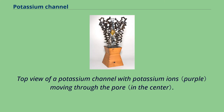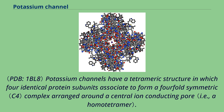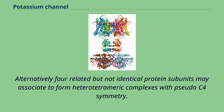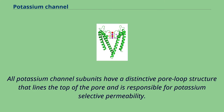Top view of a potassium channel with potassium ions moving through the pore. Potassium channels have a tetrameric structure in which four identical protein subunits associate to form a four-fold symmetric complex arranged around a central ion-conducting pore. Alternatively, four related but not identical subunits may form heterotetrameric complexes with pseudo-C4 symmetry. All potassium channel subunits have a distinctive pore loop structure that lines the top of the pore and is responsible for potassium-selective permeability.